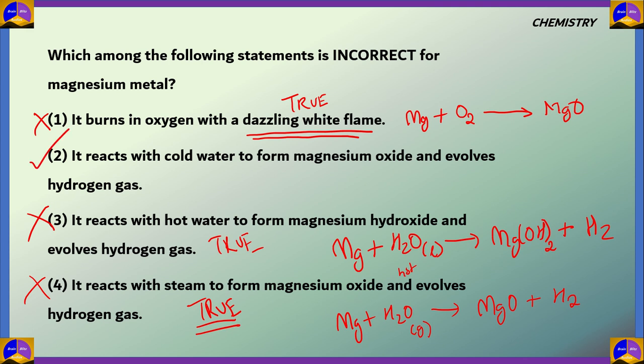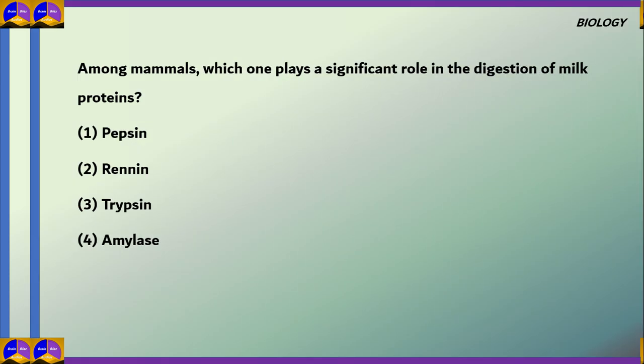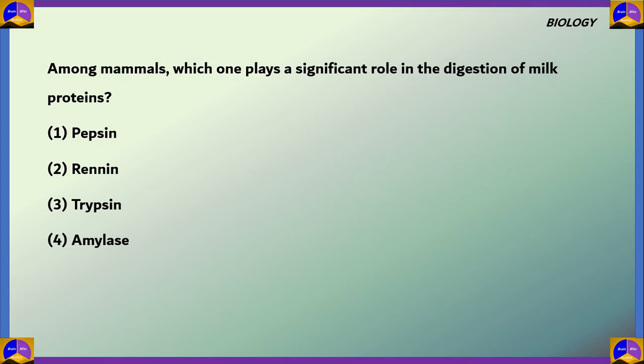The correct answer is option 2. It says it reacts with cold water to form magnesium oxide and evolves hydrogen gas. This is a false statement. Magnesium does not react with cold water because it is not as reactive as metals like sodium and potassium which reacts vigorously with cold water. Magnesium does not react with cold water. So option 2 is the correct answer for this question.